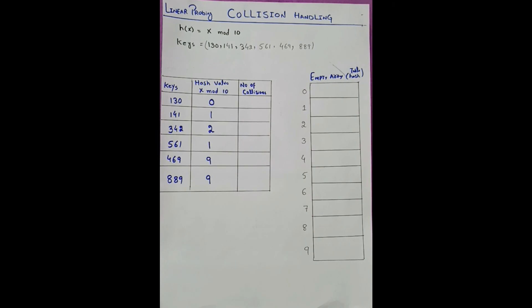Our next step is to place all values into the hash table, and wherever a collision occurs, we solve it through linear probing.